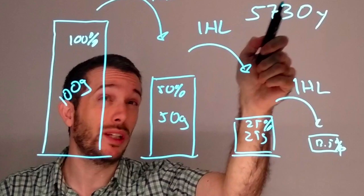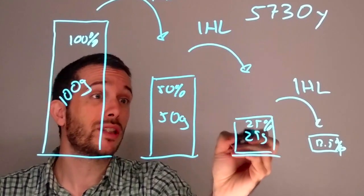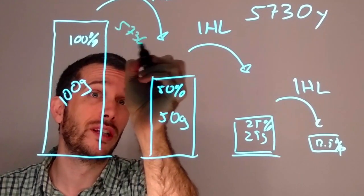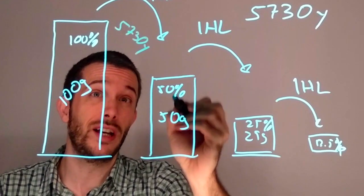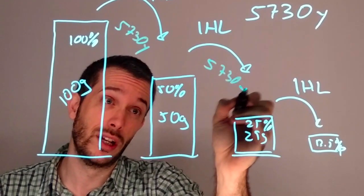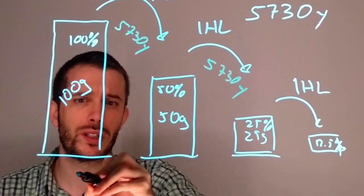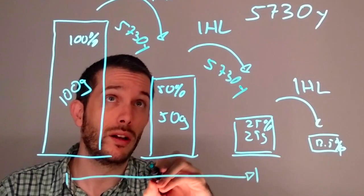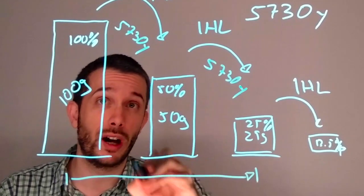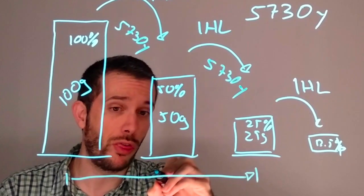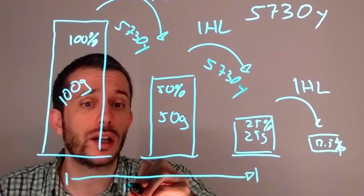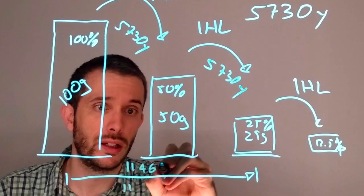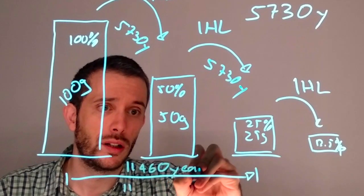And that would mean that your wood must have been cut down at least 5730 years to get 50%, and another 5730 years to get to your 25%. So, then you could say, okay, my wood must have been cut down 2 times 5730 years, so 11,460 years ago.